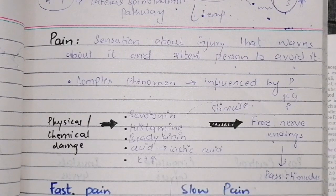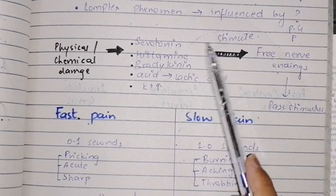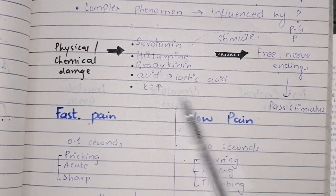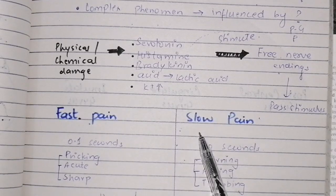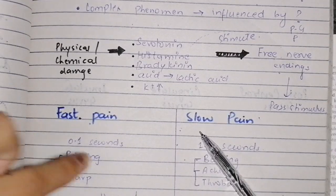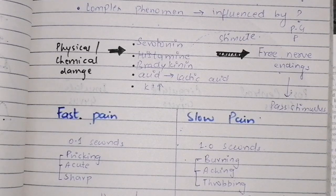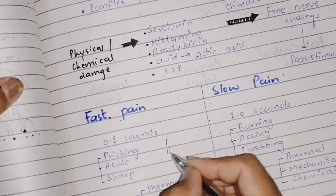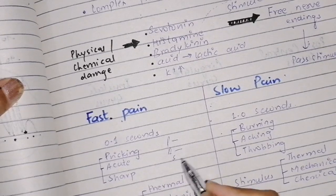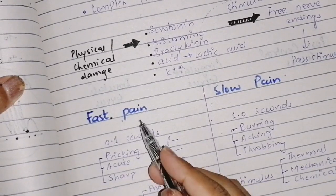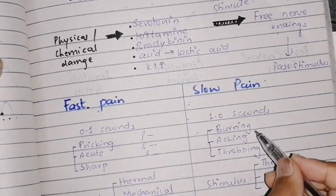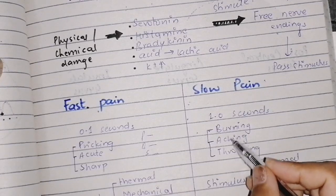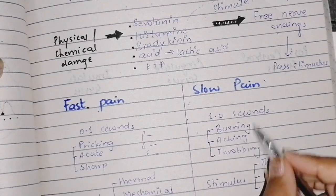The response to tissue damage can be two types depending on the stimulus: fast pain or slow pain. Fast pain is what we feel immediately after the stimulus. You can remember fast pain with the mnemonic P.A.S. — Pricking pain, Acute pain, and Sharp pain. These three types are in fast pain. Burning, itching, and throbbing sensations are in slow pain.